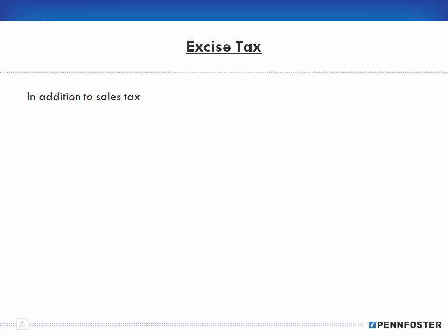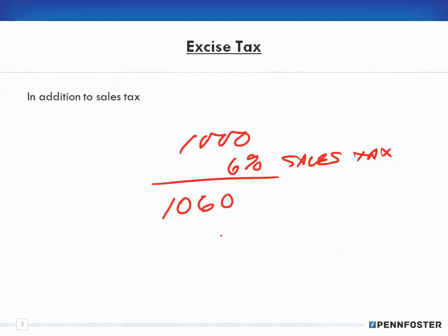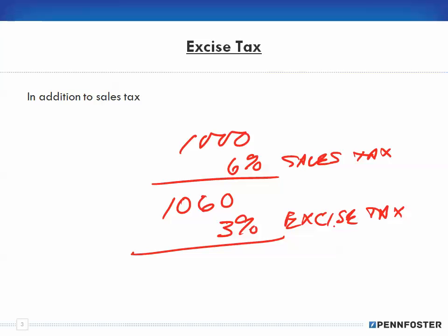Let's move on to excise tax. Excise tax is nothing more than an additional tax on specific items. If I had something for $1,000 and I had 6% in sales tax, I'd end up paying $1,060, and then I might have an additional 3% in excise tax. It's not like you pay excise tax on everything in the grocery store, but you might pay excise tax on something like an antique or something being shipped out — there are specific instances where you have that.